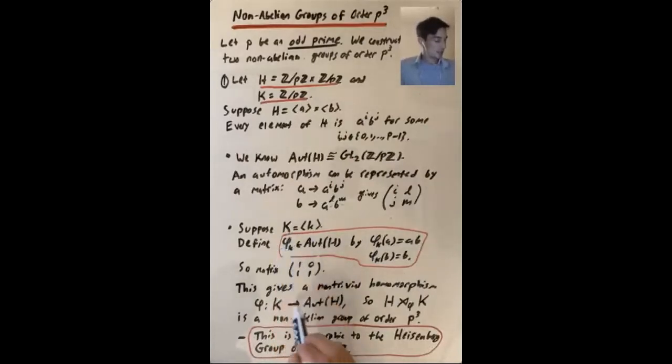So since K is cyclic, saying where it sends a generator and then extending in the natural way gives a homomorphism from K to aut H. What do I mean by that? Well, if this is a homomorphism, then phi k following phi k is phi k squared. So now that we've chosen where to send phi of little k, we know where to send phi of k squared.